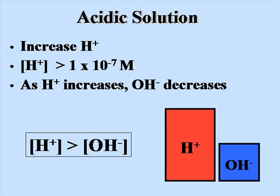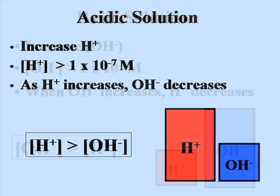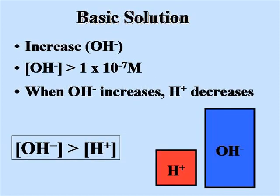This is an acidic solution. In a basic solution, you increase the hydroxide ion concentration to greater than 1×10⁻⁷ molar. When the hydroxide ion increases, the H+ decreases, and you have a basic solution.